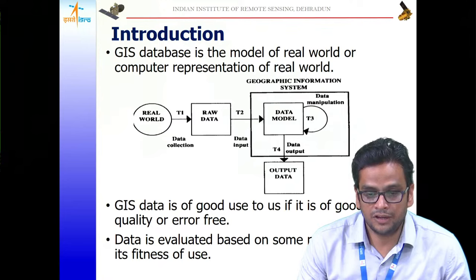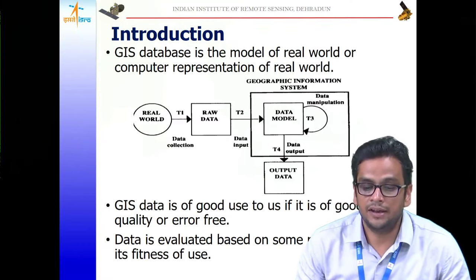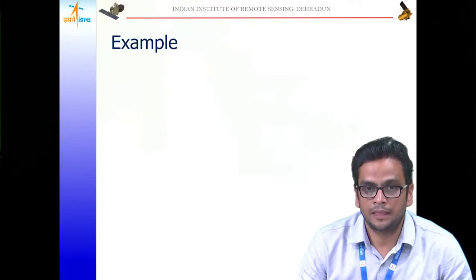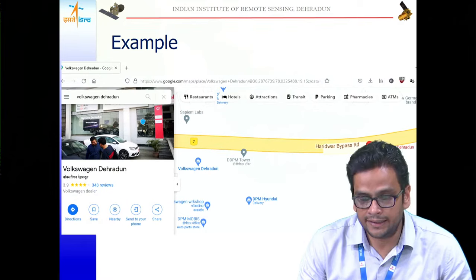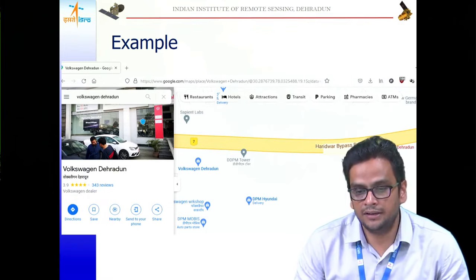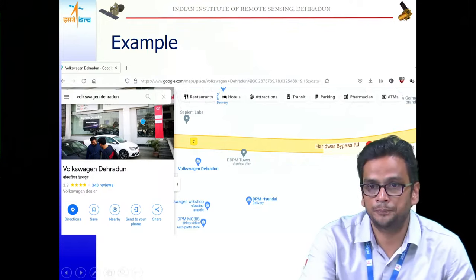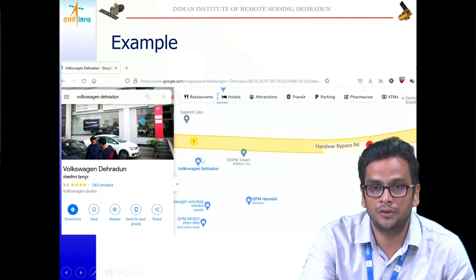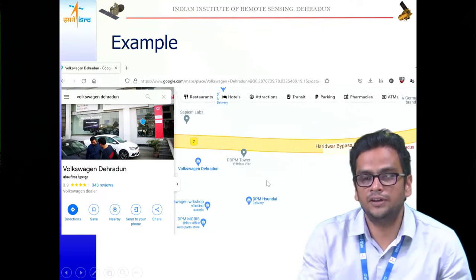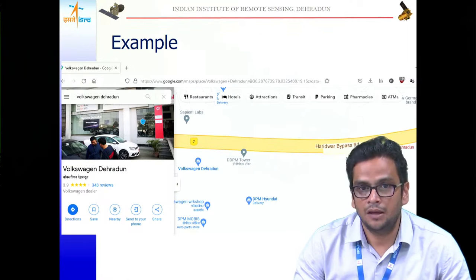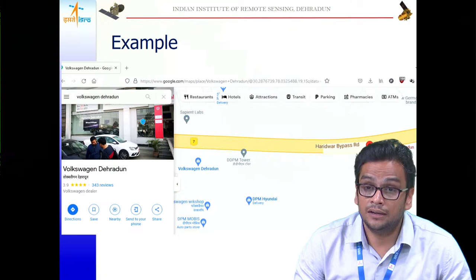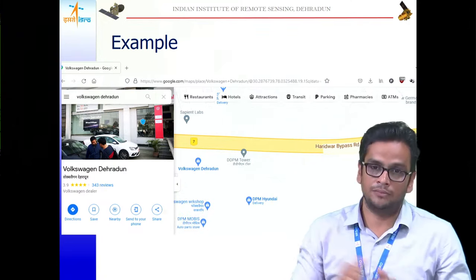Consider a real example: searching for a Volkswagen dealership on a map showed the location approximately 100–150 meters away from the actual location. For a casual visitor driving to the showroom, this inaccuracy is manageable — they can look around and find it. However, for emergency services like a fire truck or ambulance, this level of inaccuracy is unacceptable. They need precise information to reach the exact location.